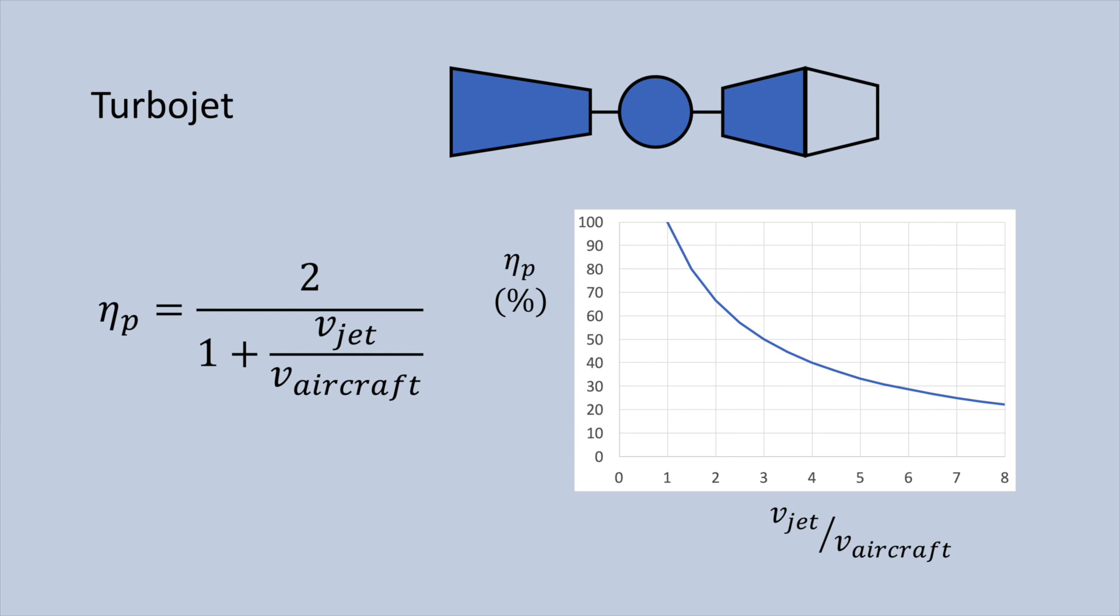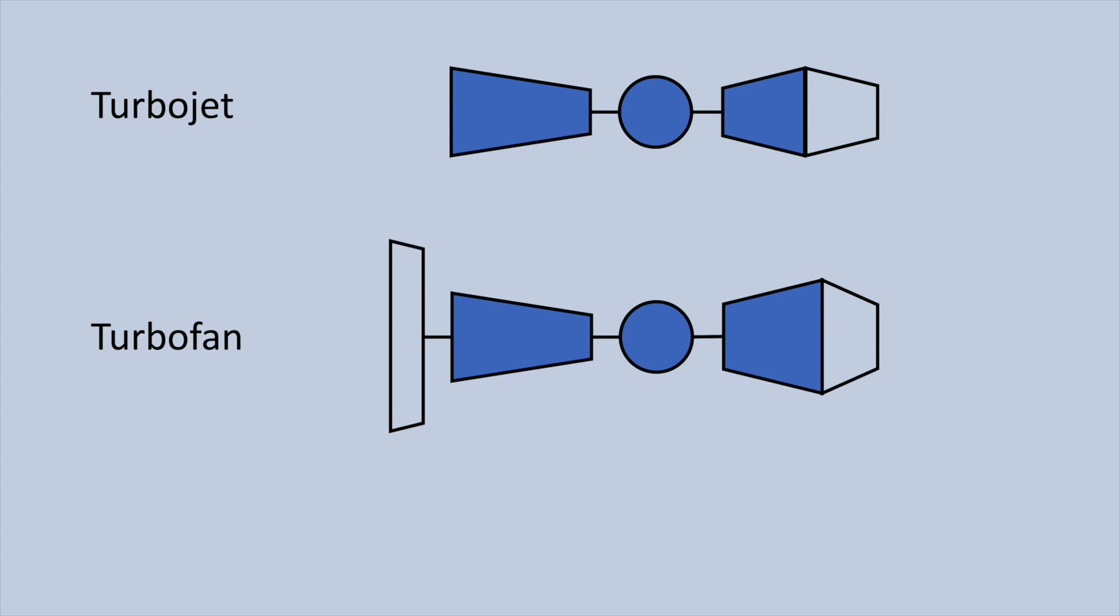To solve this problem, the turbofan engine was developed. The turbine was designed to extract more energy from the flow. On one hand, this reduces the velocity of the jet exiting the gas turbine nozzle because there is less energy in the flow exiting the engine, and on the other hand, provides excess power to drive a large diameter fan, which produces its own low velocity jet.